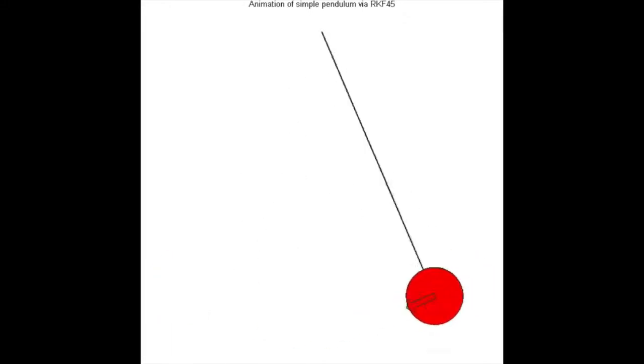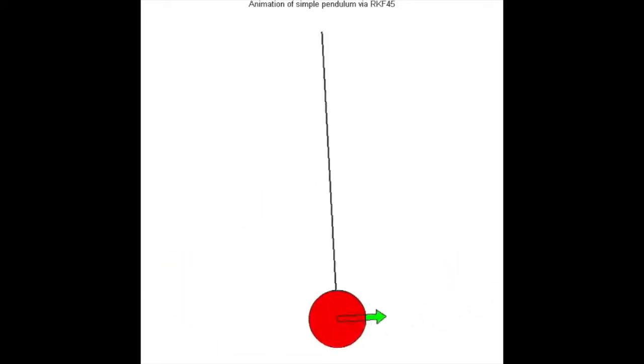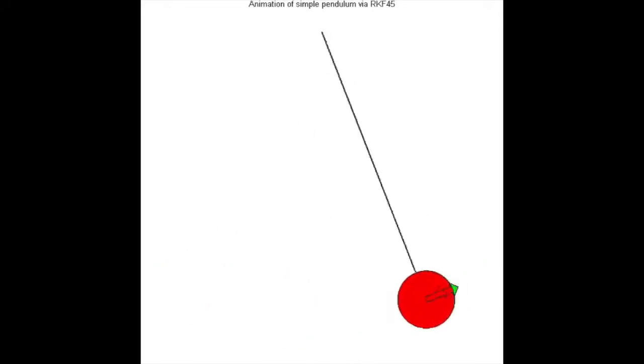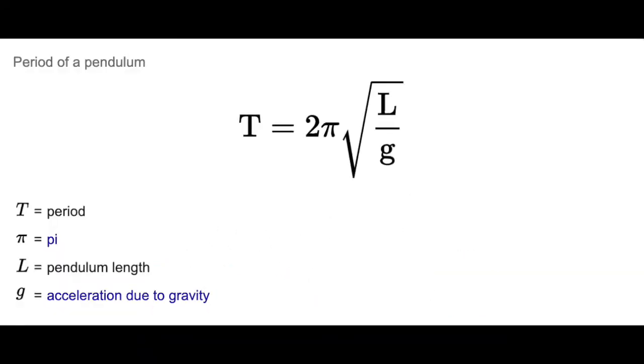This method to determine the acceleration due to gravity uses a pendulum, which is a weight suspended from a pivot so that it can swing freely. When a pendulum is displaced sideways from its equilibrium position, it is subject to a restoring force due to gravity that will accelerate it back towards the equilibrium position. The time for one complete cycle is called the period. The period is dependent on gravity and the length of the pendulum.